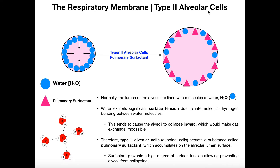Before we get into their function, let's think about an alveolus — remember, that's the term for one of the alveoli. So right here I've drawn one alveolus. Alveolus is the term for one; alveoli is plural. So this is just one alveolus.